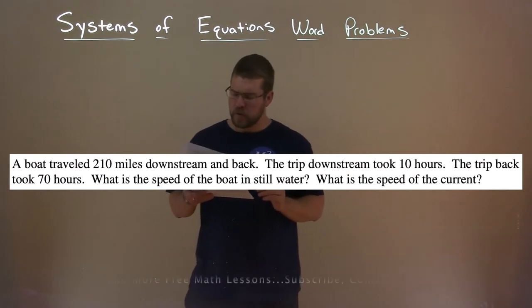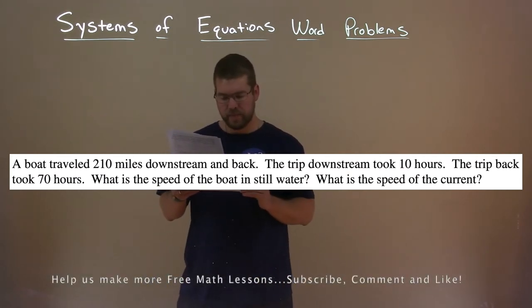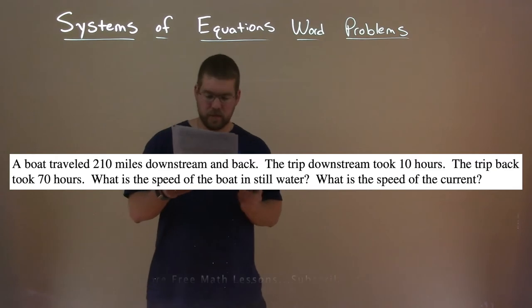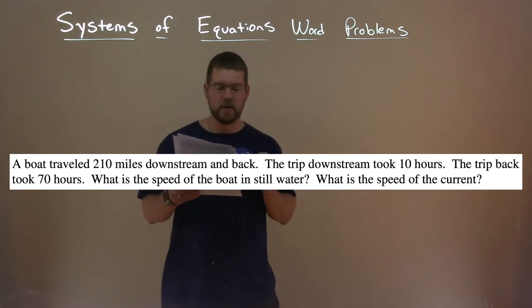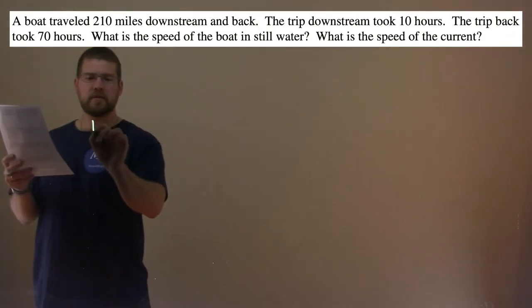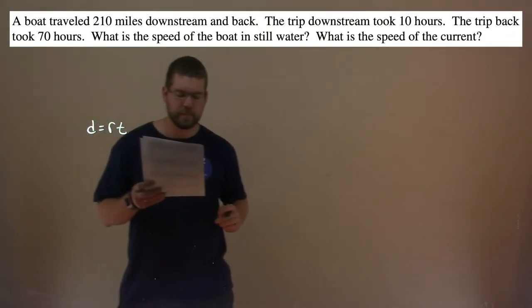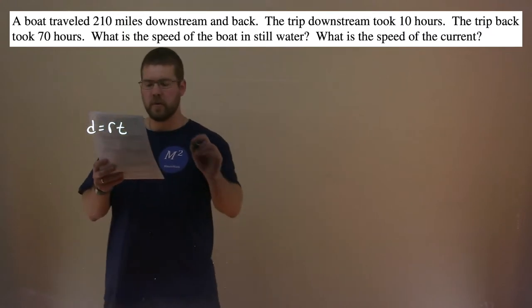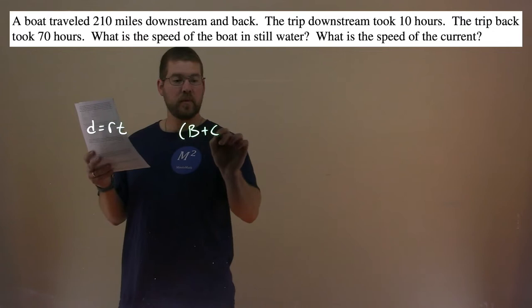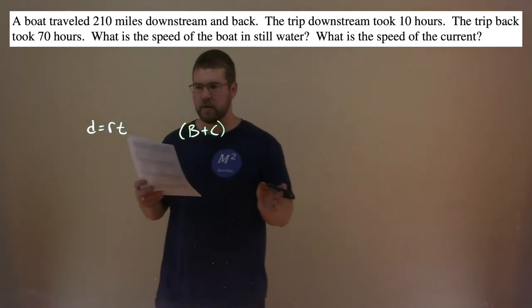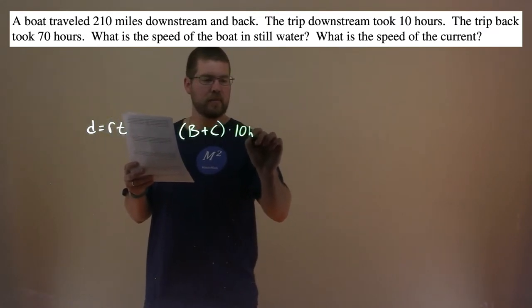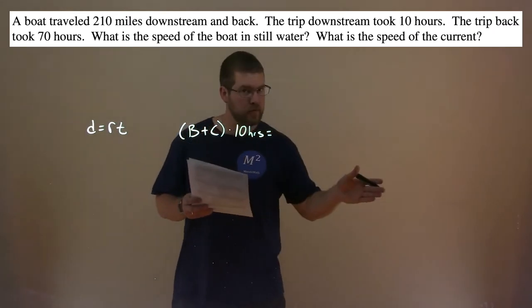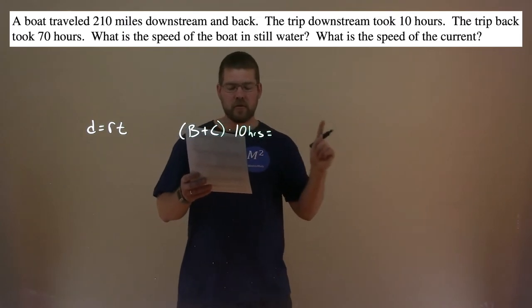We're given this problem: a boat traveled 210 miles downstream and back. The trip downstream took 10 hours, the trip back took 70 hours. What is the speed of the boat in still water and the speed of the current? We know distance equals rate times time. Downstream, the speed of the boat plus the speed of the current is our rate, times 10 hours equals 210 miles.